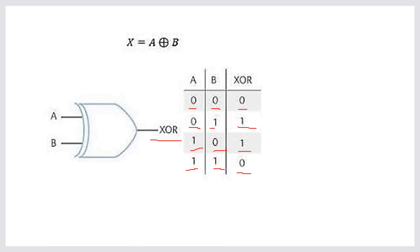Think of it like this: zero plus zero equals zero, zero plus one equals one, one plus zero equals one, and one plus one equals zero — and it will carry one bit.